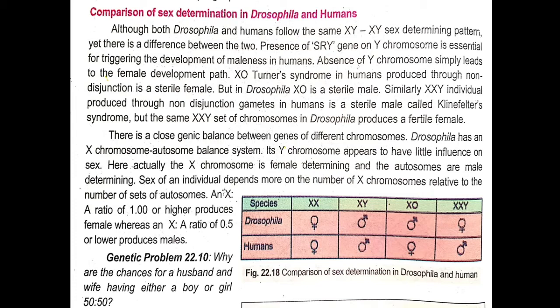The presence of the SRY gene on the Y chromosome is essential for triggering the development of maleness in humans. This gene, called the SRY gene, is responsible for male development — that is, it produces or initiates maleness in human males.